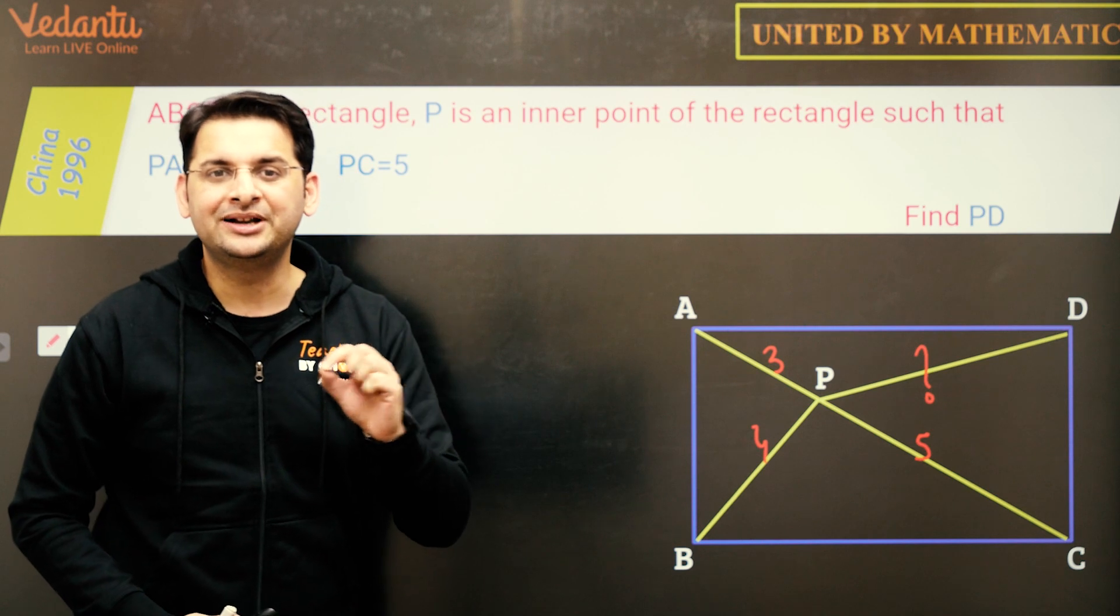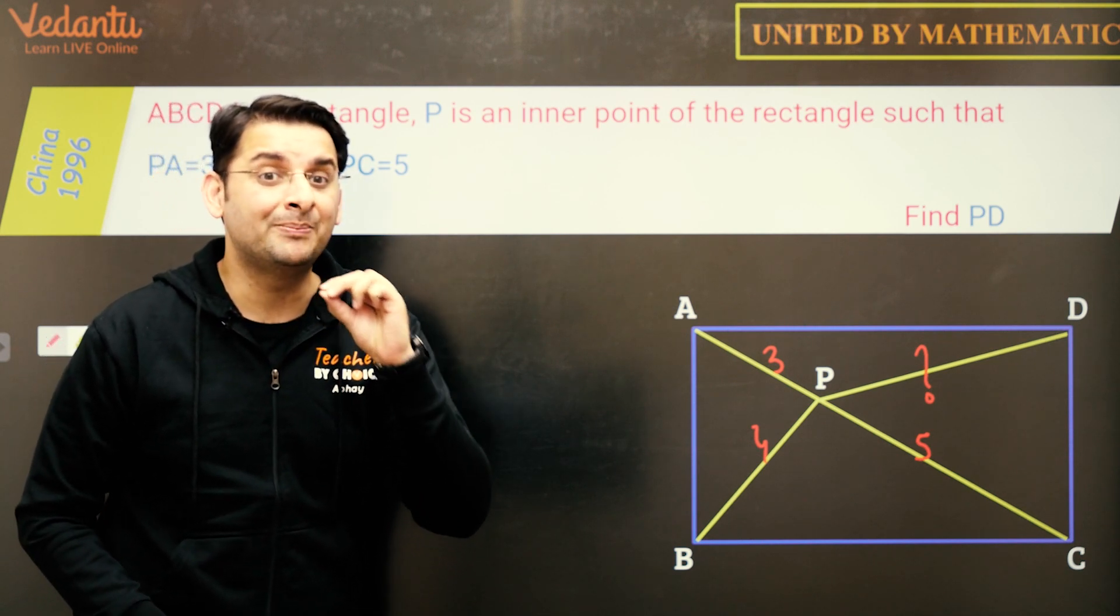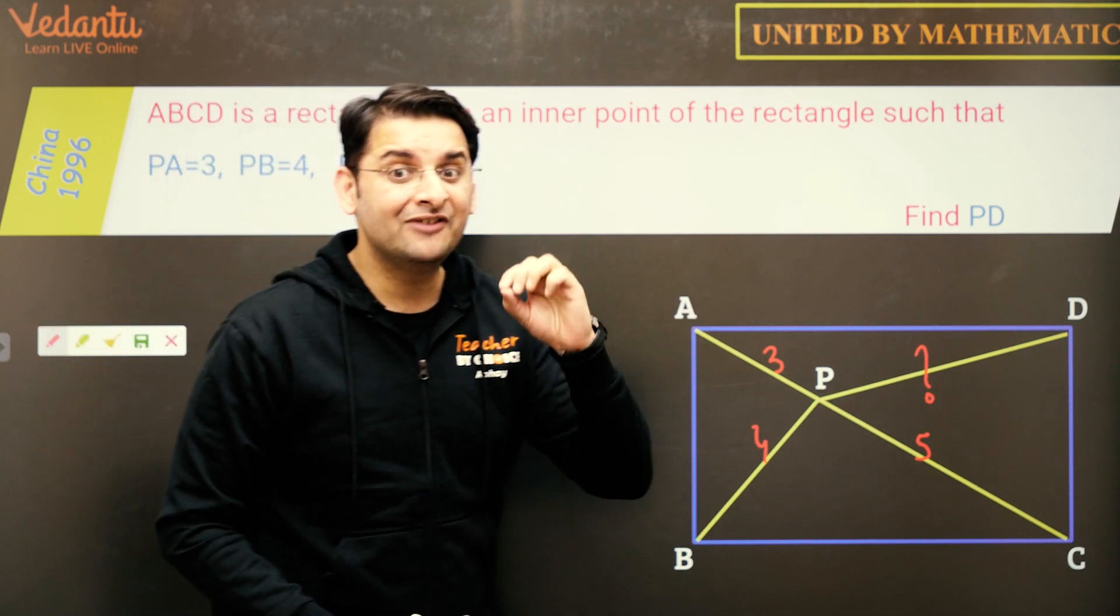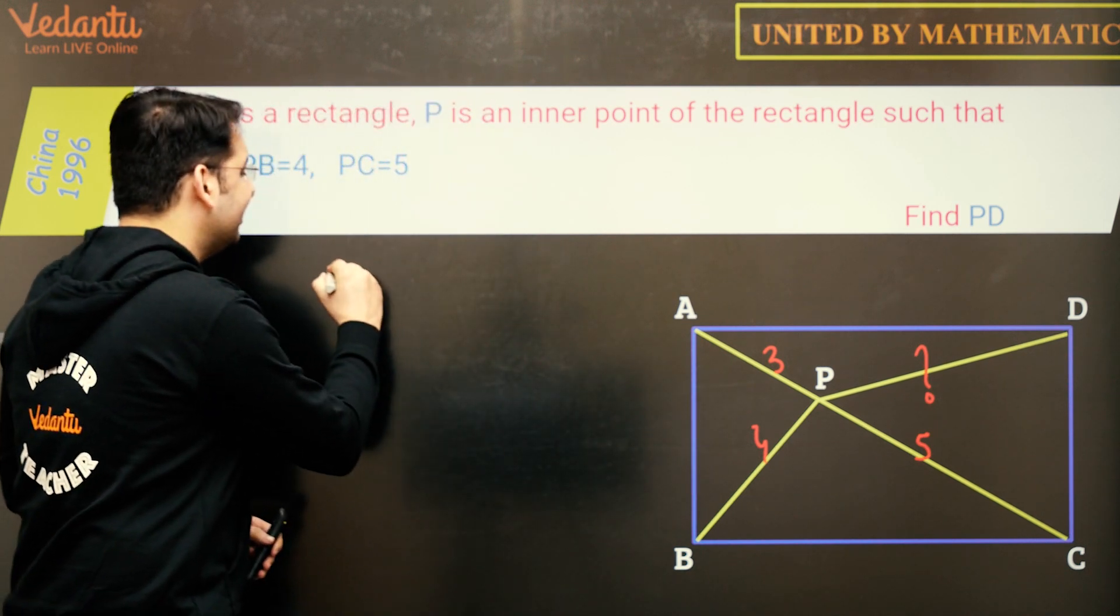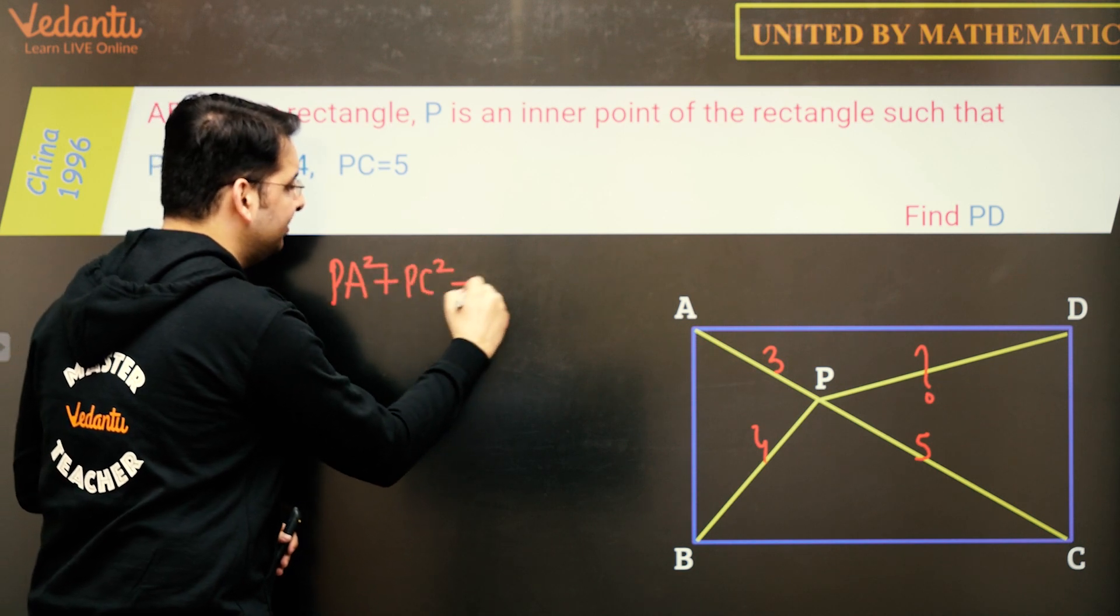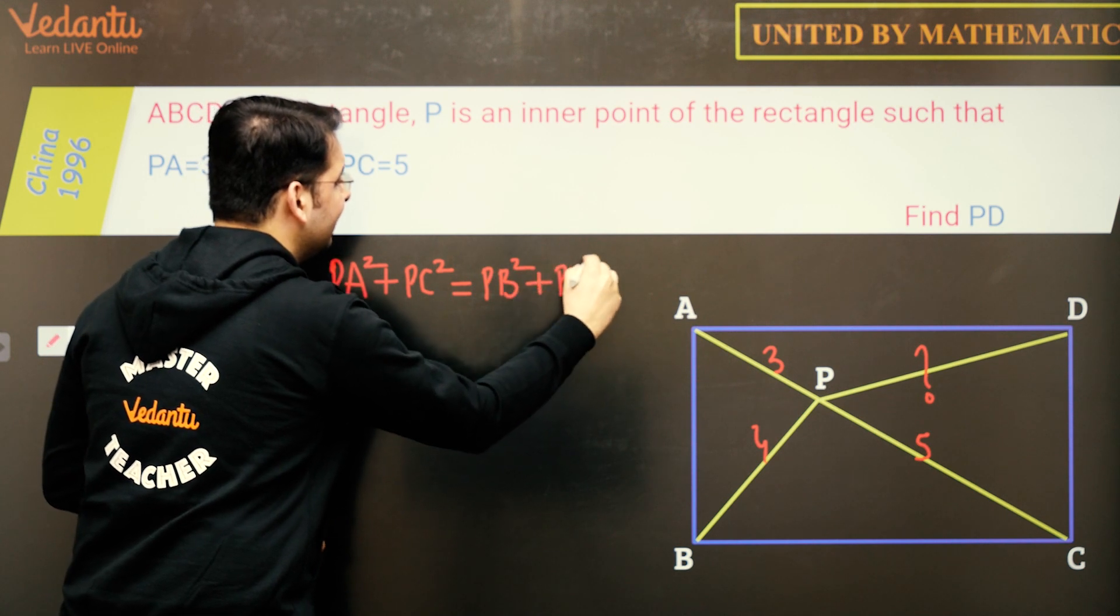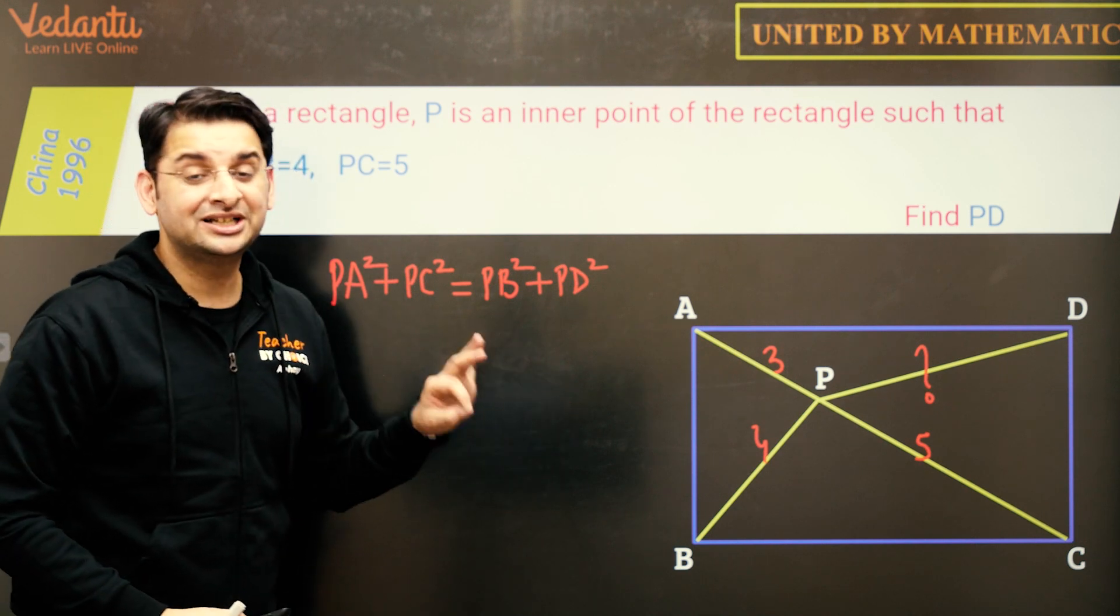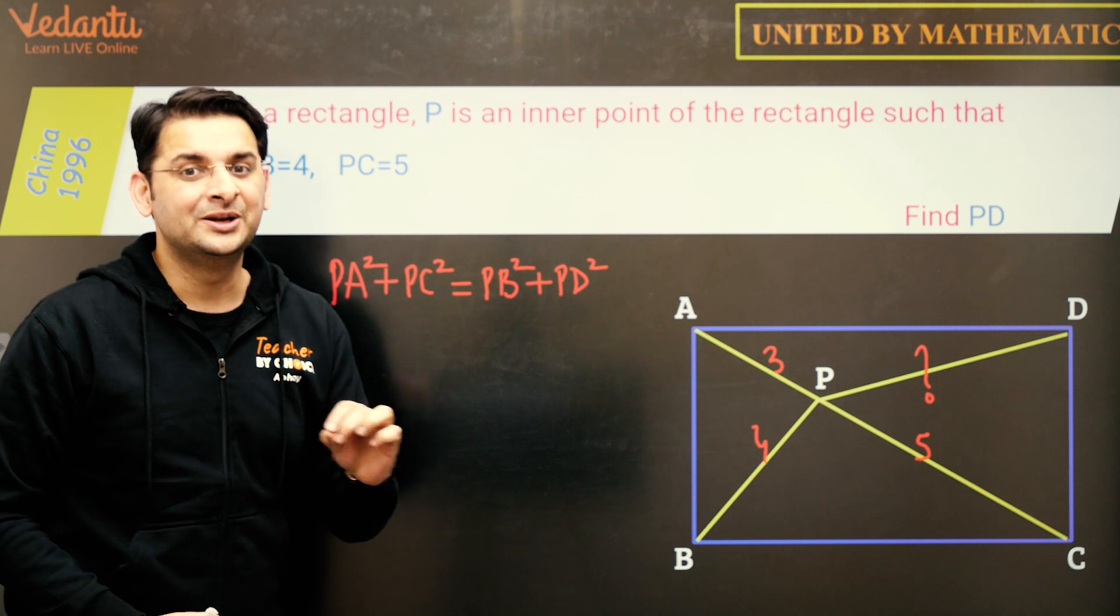Now this question may be tricky for some but if you are able to prove and then apply the claim which I am going to give you, it will be very easy. So the claim is, if P is any point inside the rectangle then PA square plus PC square will be equal to PB square plus PD square. And we will try to prove this and then find the value of PD. So this is a very simple claim which is very easy to prove and let us prove this claim.